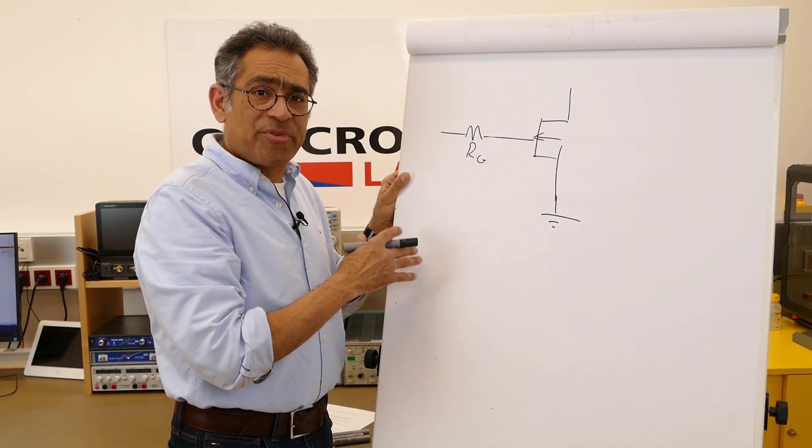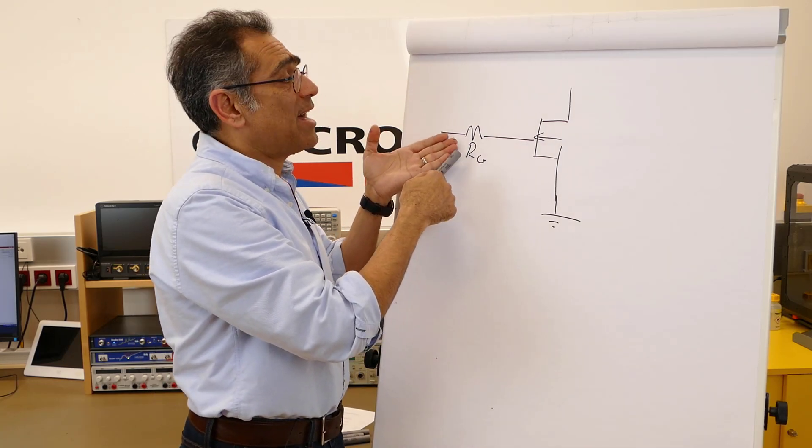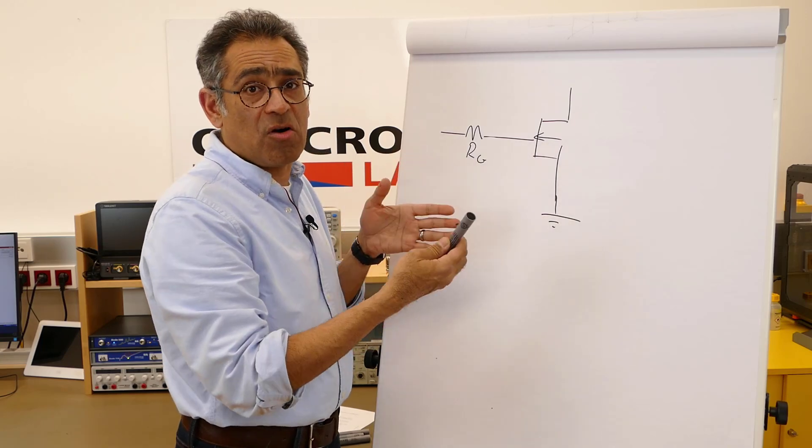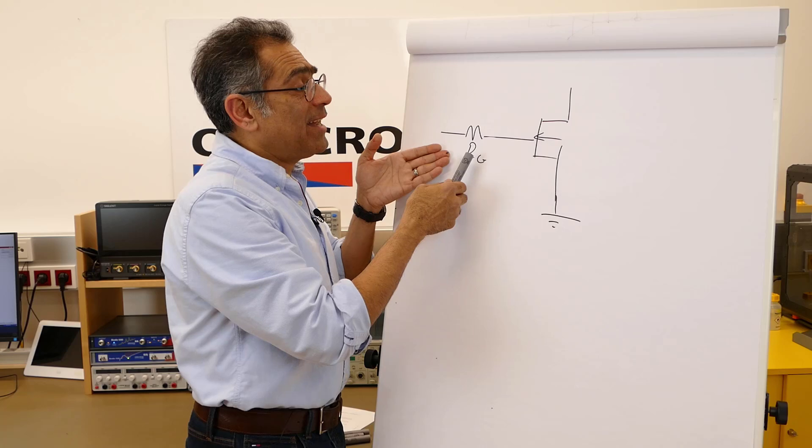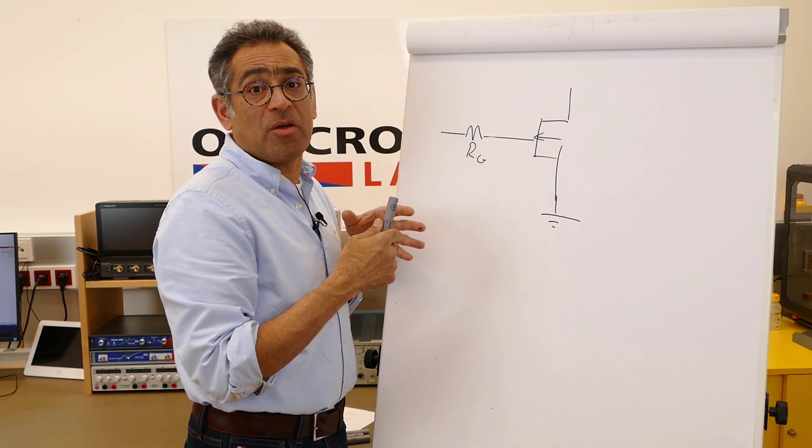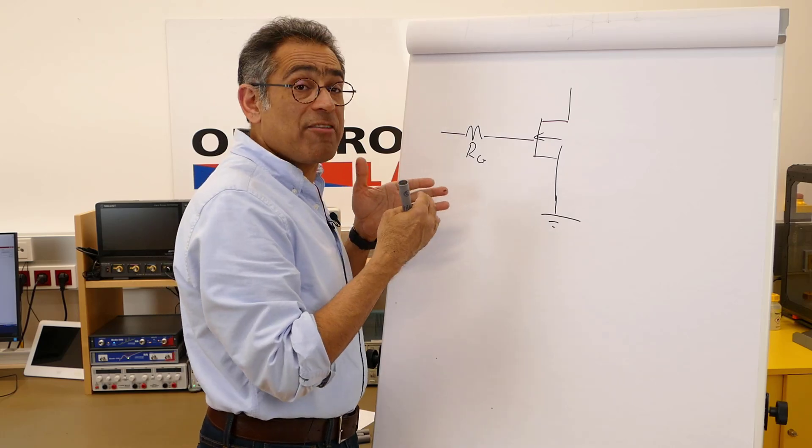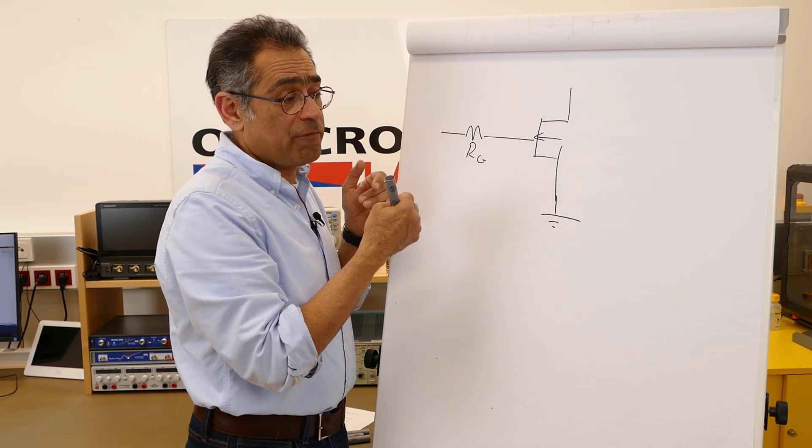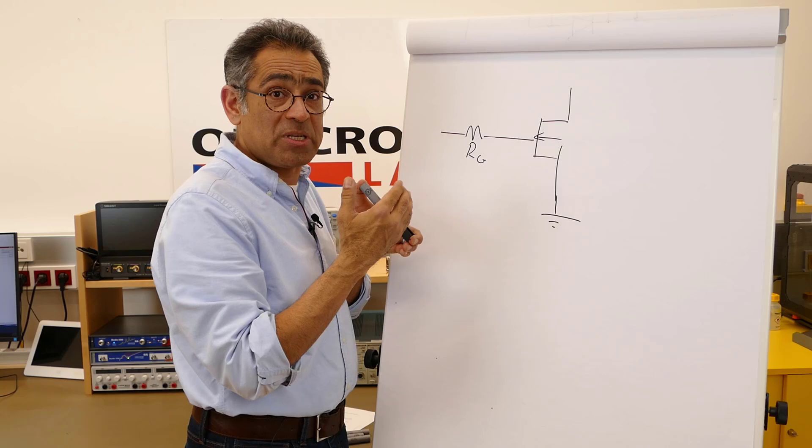So in our previous video we presented something like this, whereby we said you put a gate resistor here and that of course slows down the rate at which your MOSFET turns on and turns off. We selected the value of this resistor based on the amount of ringing, and some people quite rightly pointed out that you may have other criteria for trying to slow down the turn-on of the MOSFET, and you may wish to change the turn-off speed also.